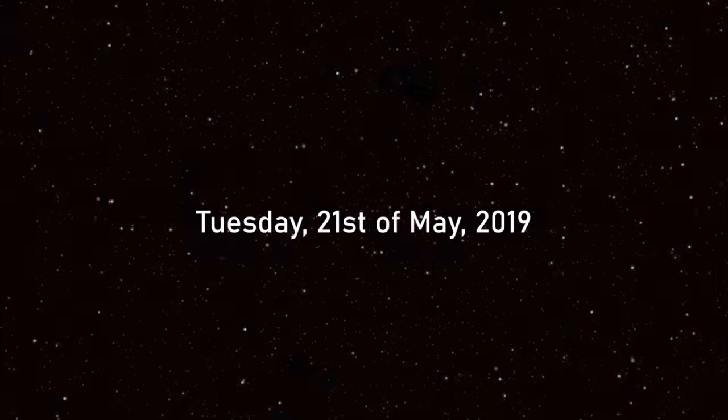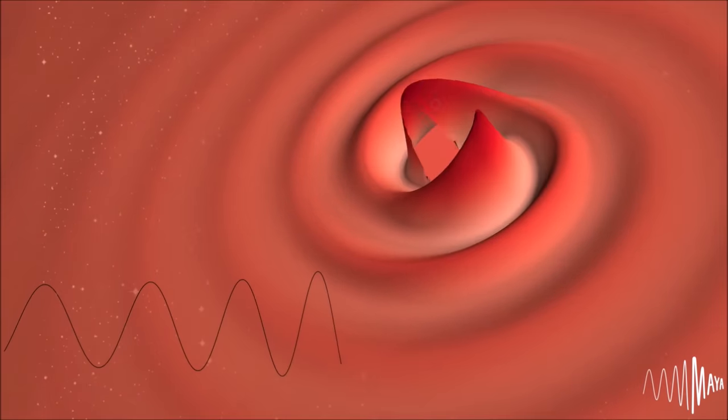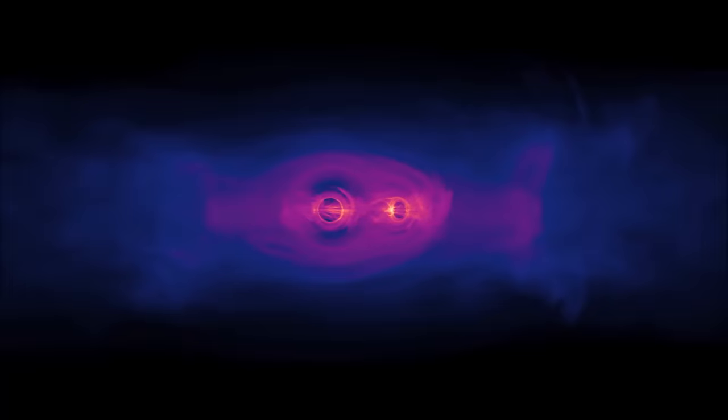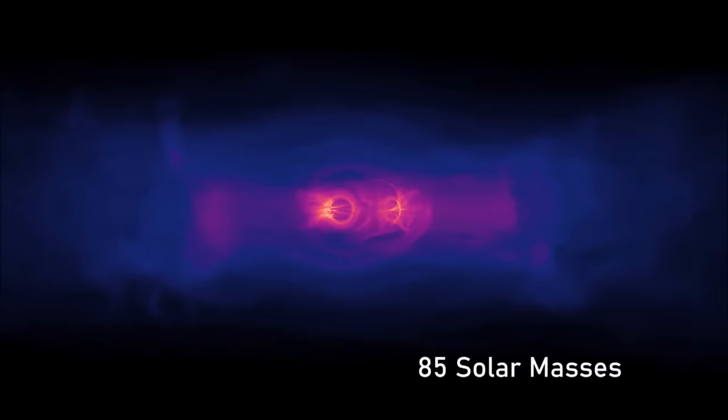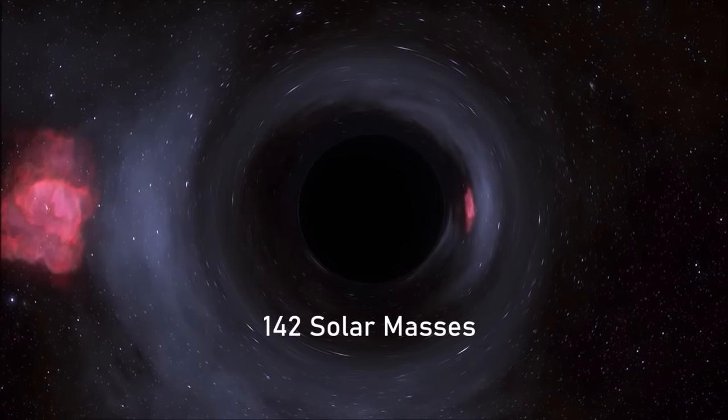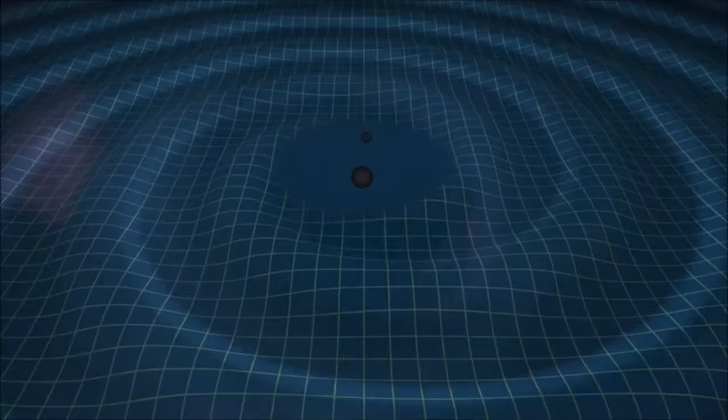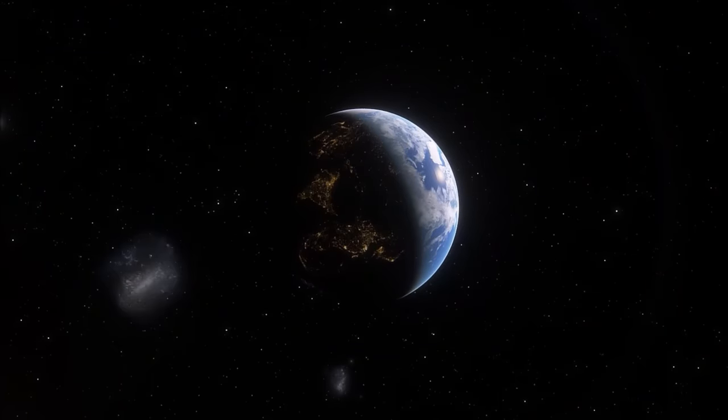The gravitational wave signal is dubbed GW190521, after the date it was first picked up, the 21st of May 2019. The signal consists of four short wiggles, lasting for less than a tenth of a second. During this time, two black holes with a combined mass of more than 150 suns came together. Both merging black holes were stellar scale, one at 66 solar masses, and the other at 85 solar masses. They came together to form a much larger, intermediate mass black hole, weighing 142 times the mass of the sun, thus placing it in the intermediate mass group. The remaining eight or nine solar masses radiated away from the collision site in the form of gravitational waves, which have only just reached us now after several billion years.